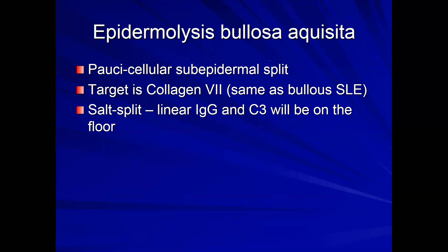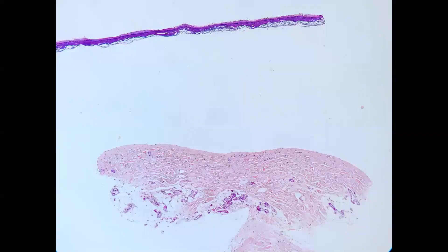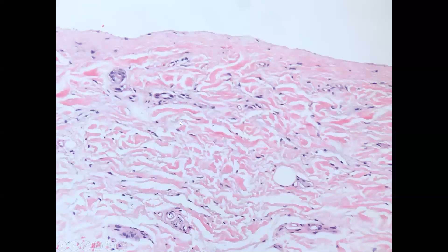Moving on to epidermolysis bullosa acquisita — a paucicellular subepidermal split where the target is collagen VII and linear staining on DIF will be present on the floor of the blister. Here's a picture of the epidermis floating off from the dermis in a patient with EBA. From low power, there is very little inflammation. On closer view, this is a clean split — an autoimmune blistering disorder — with very little inflammation.